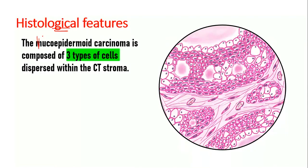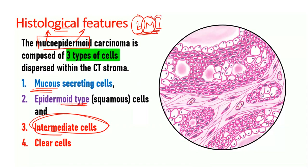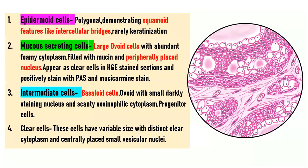Histologically, the name already tells us there are mucus-producing and epidermoid cells. There is one more cell type to remember: intermediate cells. So the three cell types are mucous-secreting, epidermoid, and intermediate — remembered by the mnemonic EMI. Epidermoid cells are squamoid cells, polygonal with intercellular bridges and sometimes keratinization.